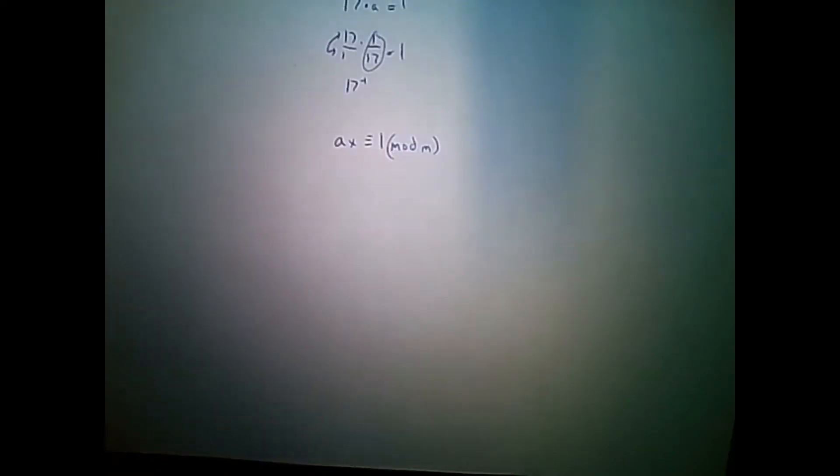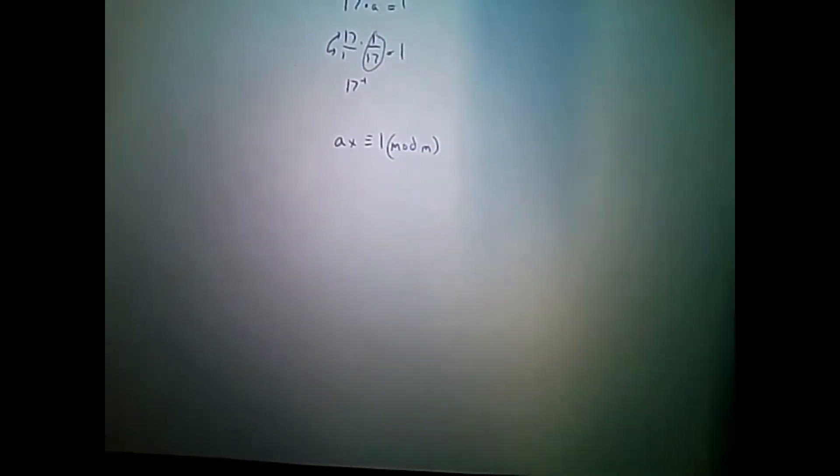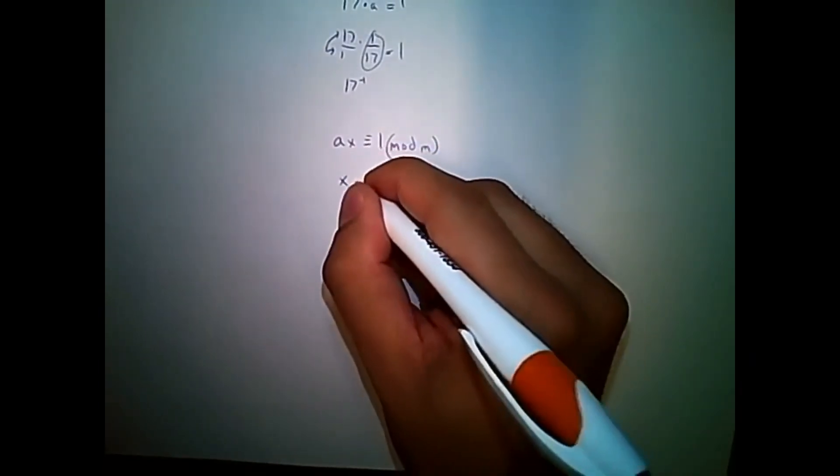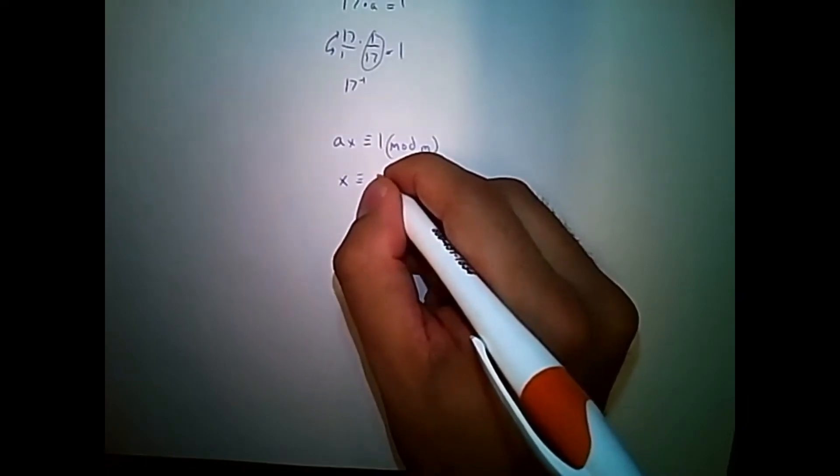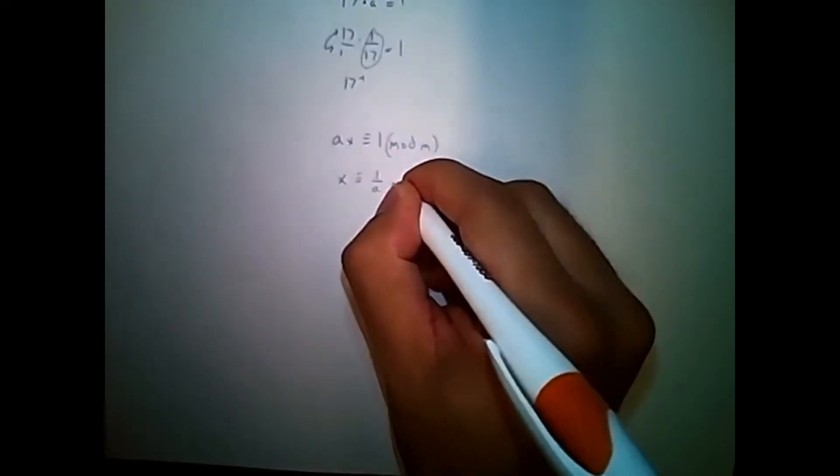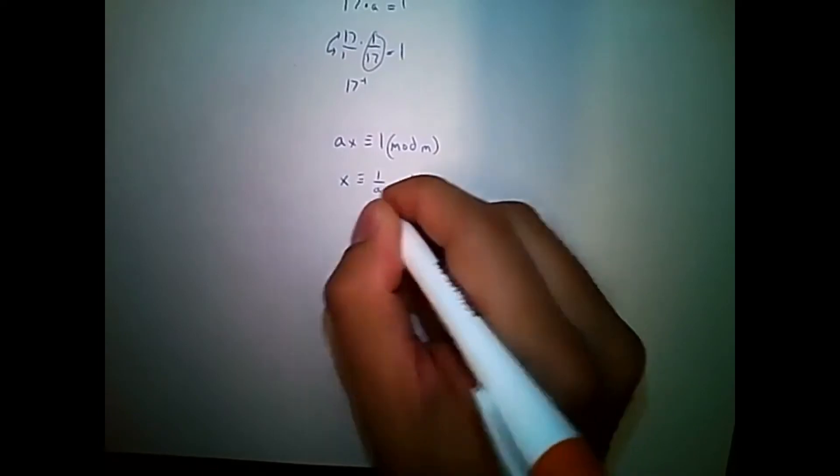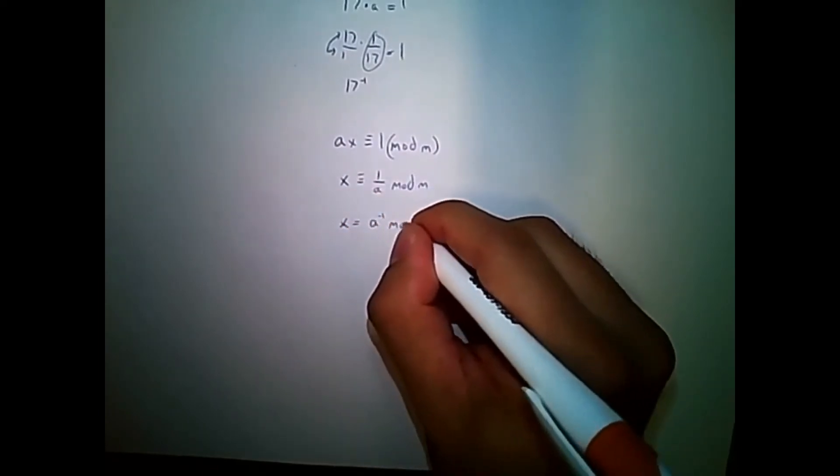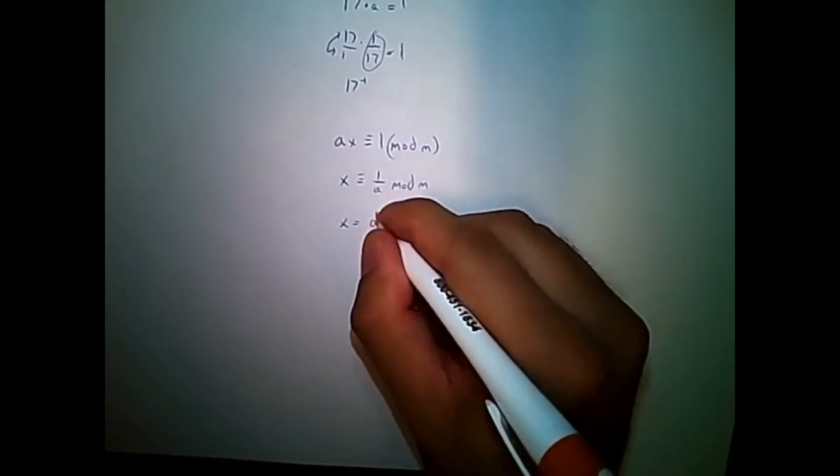Let's just take a look at an example. I can write this equation similarly, x equal to 1 over a mod m. x equals a to the minus 1 mod m. This is what we're solving for here.